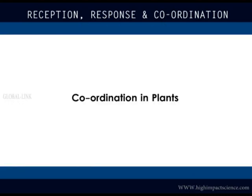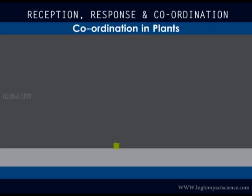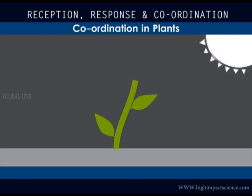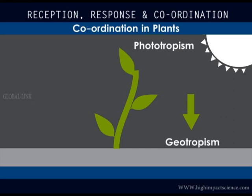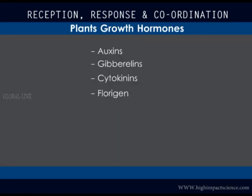Now we look at coordination in plants. We know that plants' growth requires enough water, minerals, and energy. But why do plants bend towards light and not grow straight? And why is it that stems grow up but roots grow down? We talked about tropism, that is phototropism and geotropism. Plants' growth is controlled by hormones, which include auxins, gibberellins, cytokinins, and florigen.